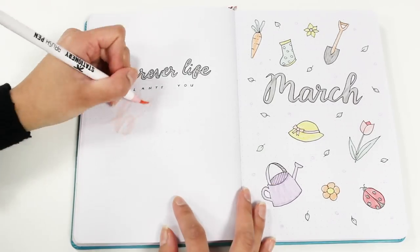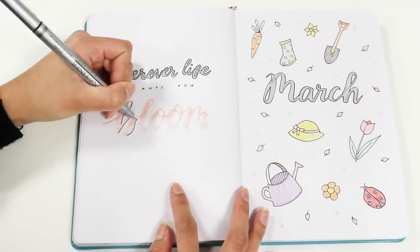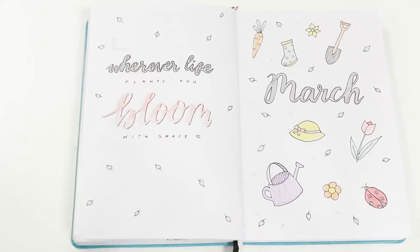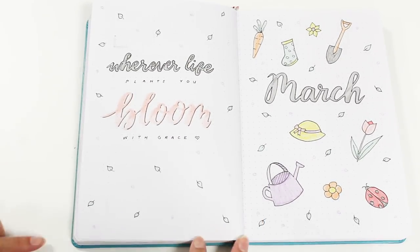Then on the other side I'm adding my quote of the month, which is 'wherever life plants you, bloom with grace,' which fits my theme really well. But I also just really like it because it's a great reminder to keep growing with grace no matter how hard or easy life gets.